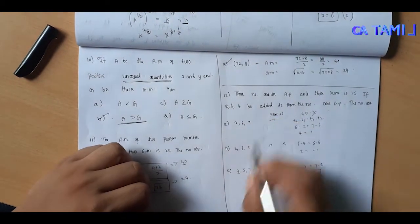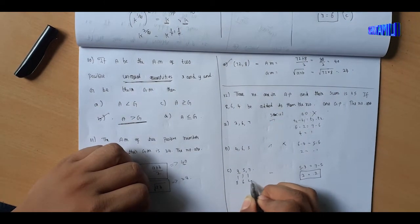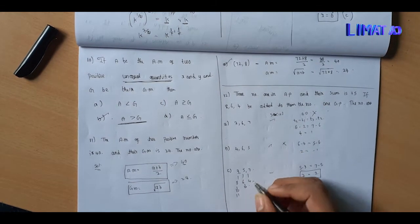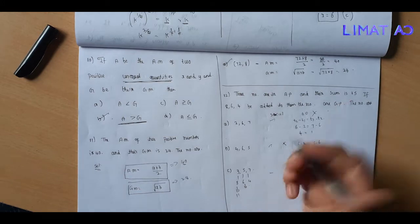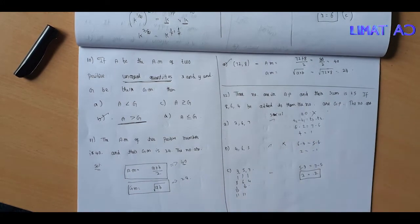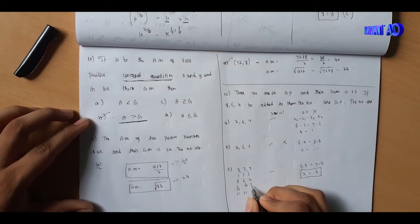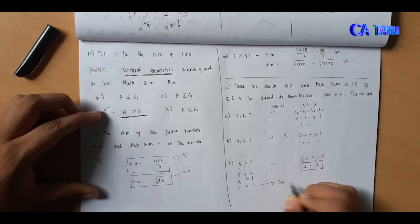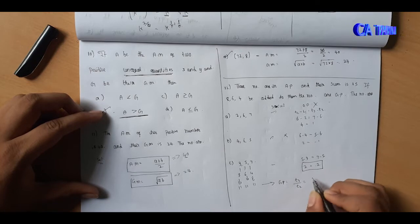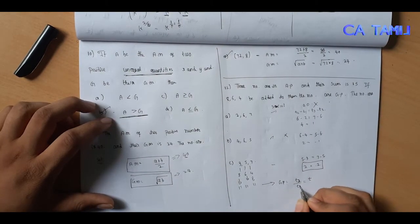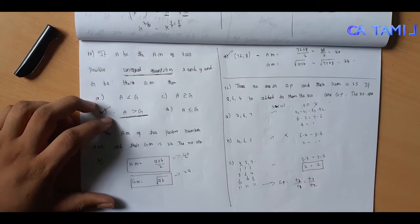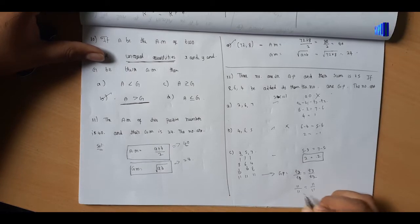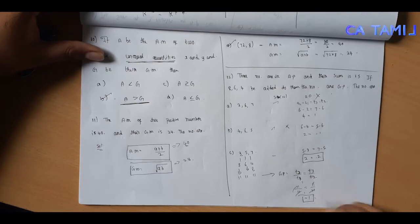Adding 8, 6, 4 gives us 11, 11, 11. Checking GP: term3 divided by term2 equals term2 divided by term1. Here 11 divided by 11 equals 1, so the GP condition is satisfied.